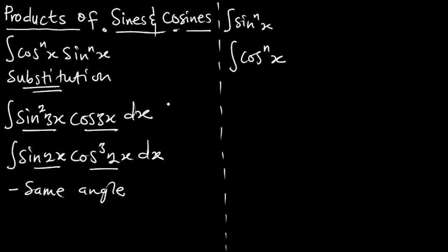So first point we see same angles. In this form, we have the angle to be 3x. And here too, there is an angle of 2x. Same angle. And we also see that one of the trig functions is linear, raised to the power 1.